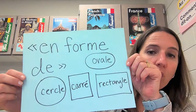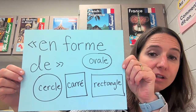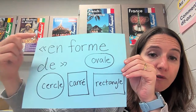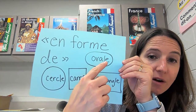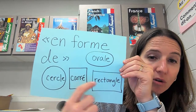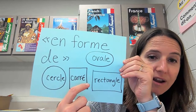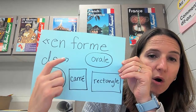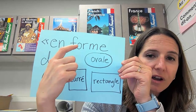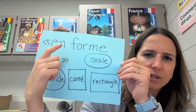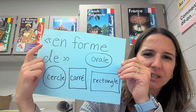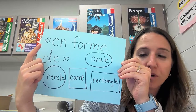There is one structure we have not done before that I'm going to show you now: en forme de. Est-ce que le monstre est en forme de ovale? Est-ce qu'il est en forme de rectangle, carré, cercle? En forme de means 'in the form or shape of.' And then these that you see are just des guillemets — they're French quotation marks.